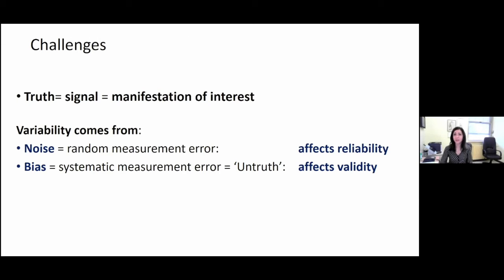The challenge when we choose an instrument is that what we want to measure is just the variability related to the signal — the manifestation of interest. We want to capture every change in the signal. However, we also know that variability may affect the instruments, and that variability is the noise, which can be assimilated to a random measurement error.